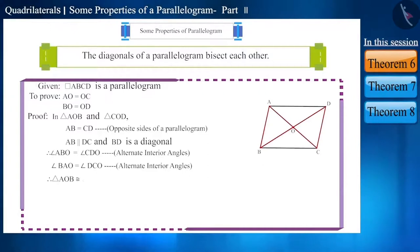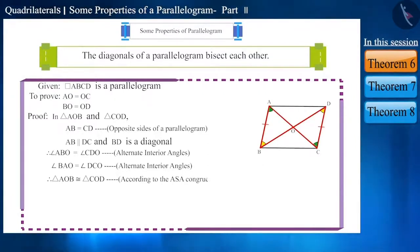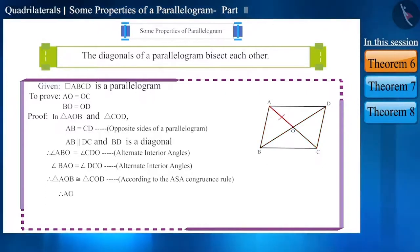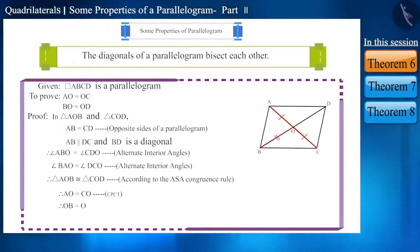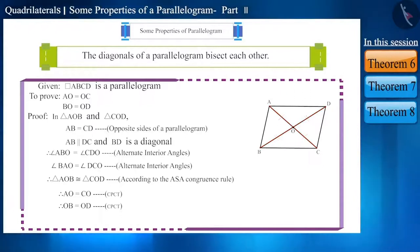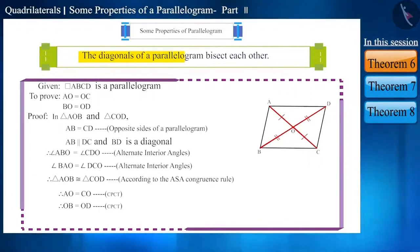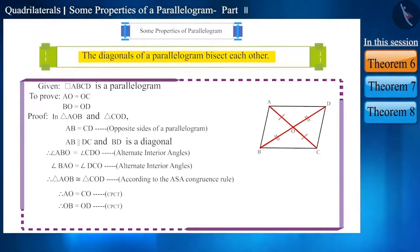And thus, both these triangles are congruent according to the Angle-Side-Angle (ASA) congruence rule. Hence, side AO is equal to side CO and side OB is equal to side OD, because the corresponding sides of congruent triangles are equal. Now we can say that the diagonals of a parallelogram bisect each other, or they divide it into two equal parts.